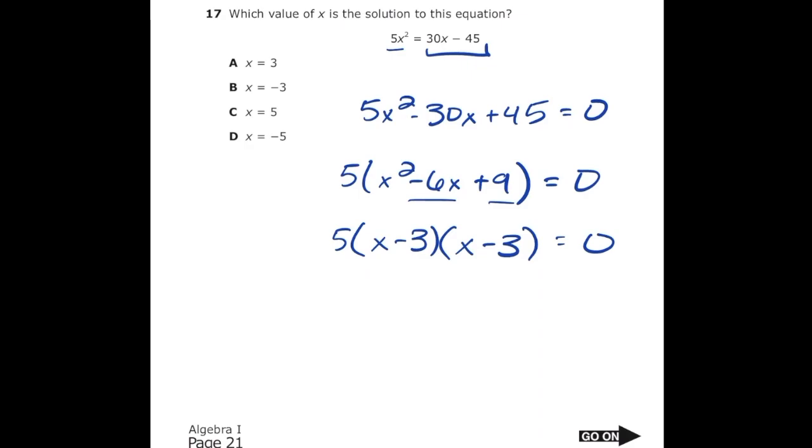So I have 5 parentheses x minus 3 another parentheses x minus 3 and we still need that to equal 0. We need to find a number that if we plug in for x is going to make that whole expression 0. Obviously that's going to be positive 3 because 3 minus 3 is 0. So that means our answer is letter A.